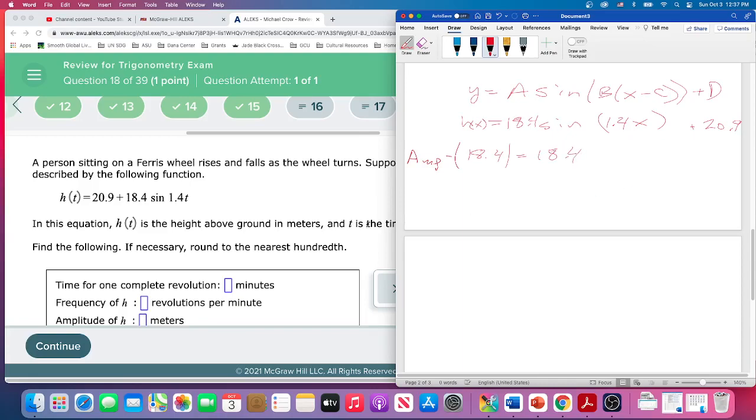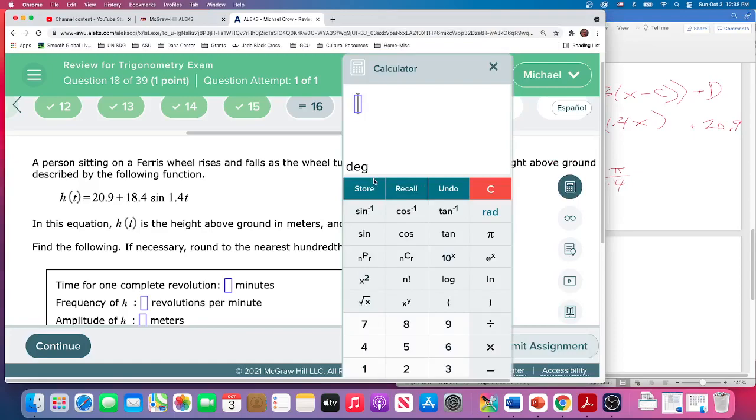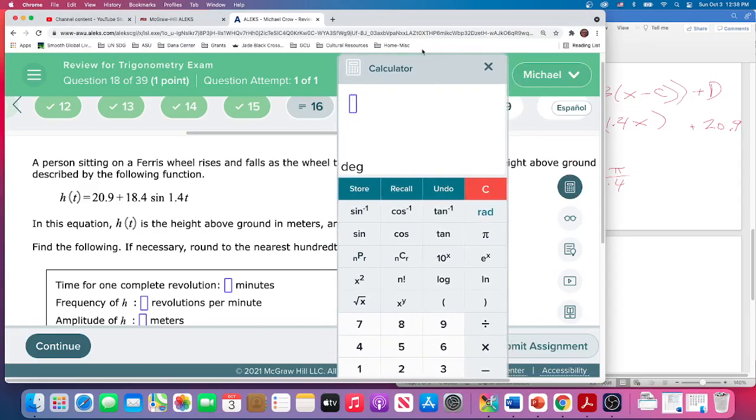Nothing to do. It's just there. But the number of complete—the time for a complete revolution, that is a period. That we need to find. And we find that the period is equal to 2 pi over B. B is 1.4. So that's 2 pi over 1.4. And they want these in decimal form.